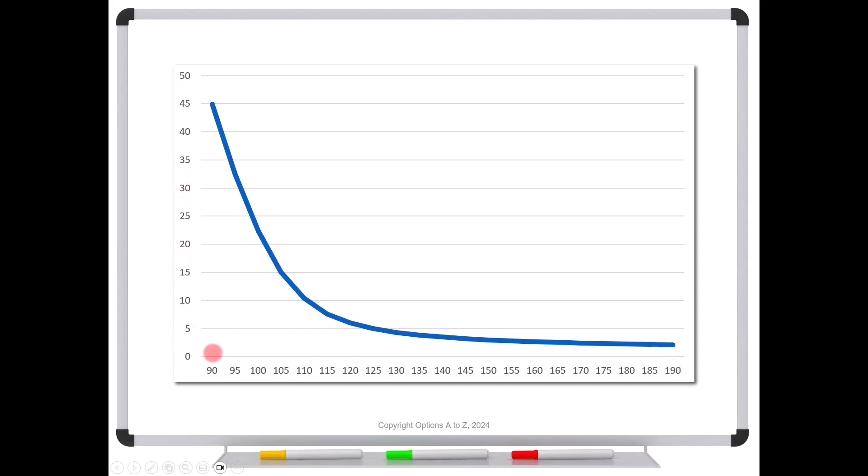And then up here is the elasticity calculation. So notice when we have an out of the money option, look at the elasticity. A 1% point change in that stock's price is going to be a 45% change in your option's price. Now again, you might think, hey, that's great. Let me go with the out of the monies. But remember, they're also very low probability.